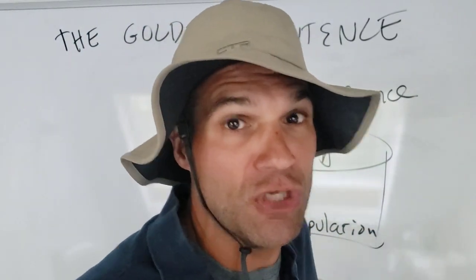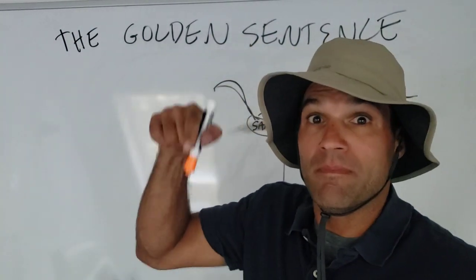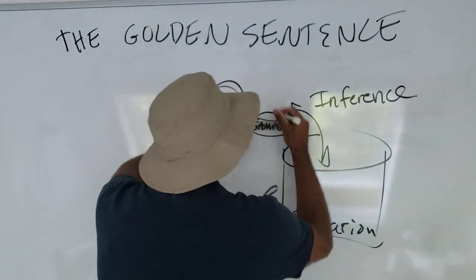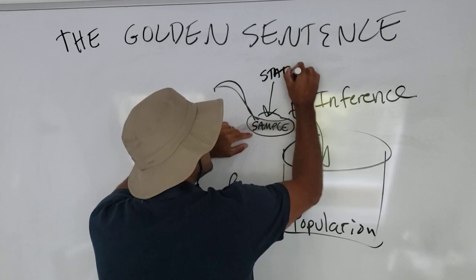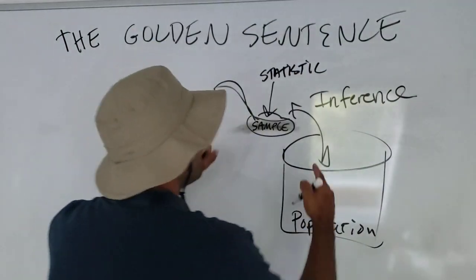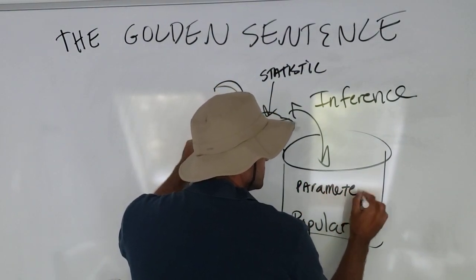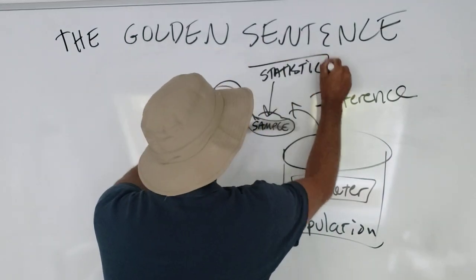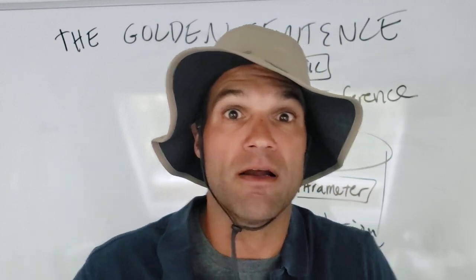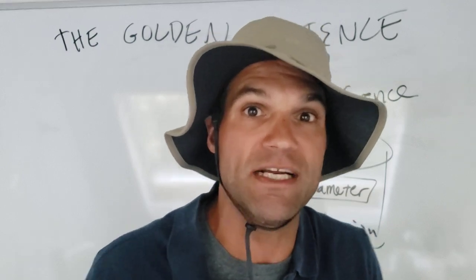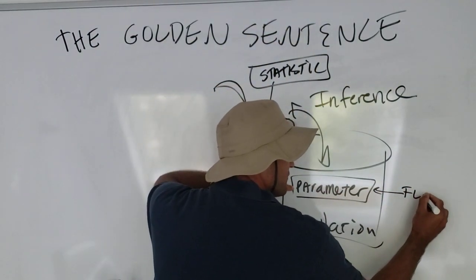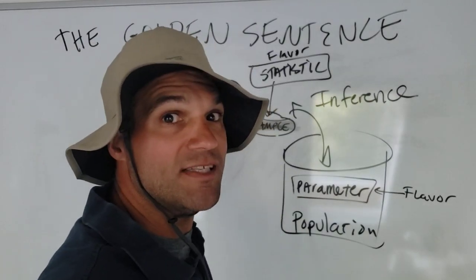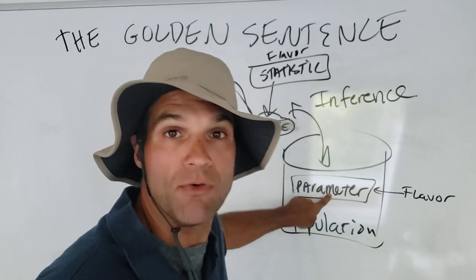Little spoon tastes good, big bowl must be good too — that's called inference. If this is yummy, that's yummy. Now, the flavor of the spoon is called a statistic. The big vat's flavor is called a parameter. The parameter is what we're interested in. We don't know what it is — we're not going to taste the whole thing. But we take a sample, and we use the statistic to make an inference about the parameter. S-s-s-sample is a statistic. P-p-p-parameters come from populations. So I use this statistic to make an inference about the population parameter — the flavor of the population.